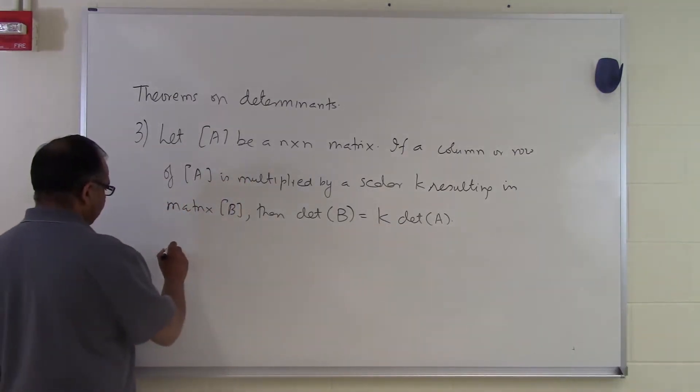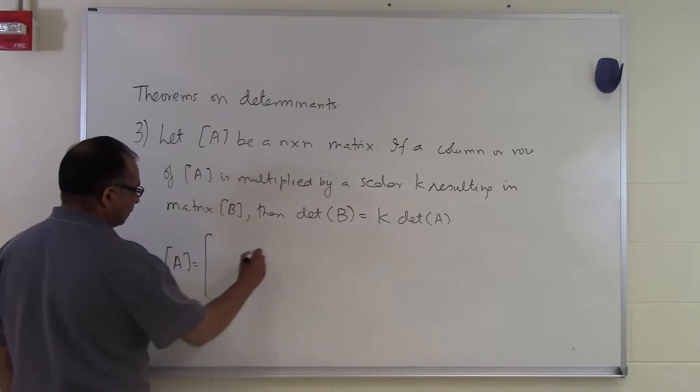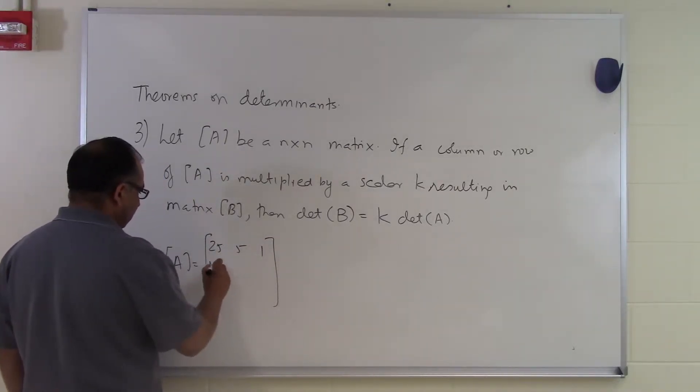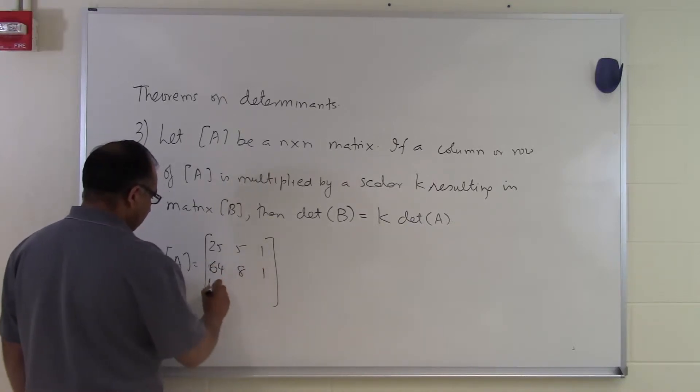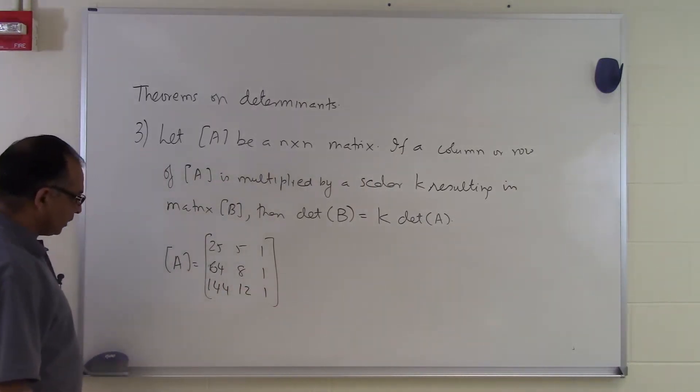Let's take an example. Let's suppose somebody gives you an A matrix which is 25, 5, 1, 64, 8, 1, 144, 12, 1. So this is the A matrix.